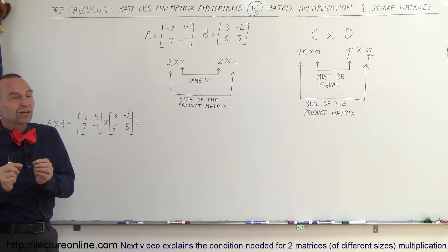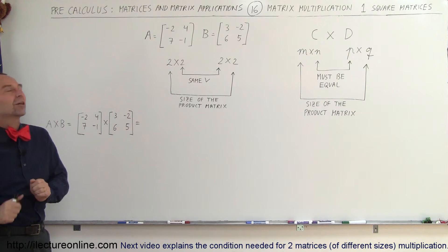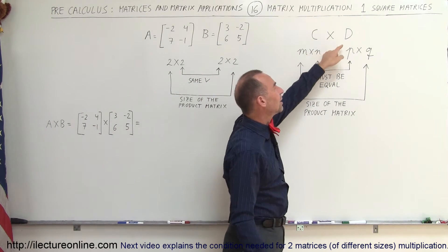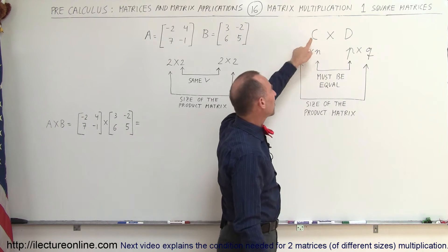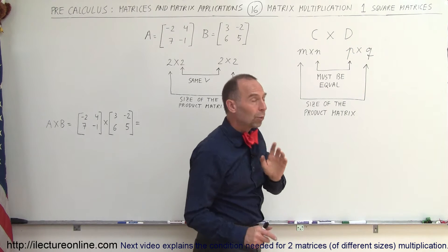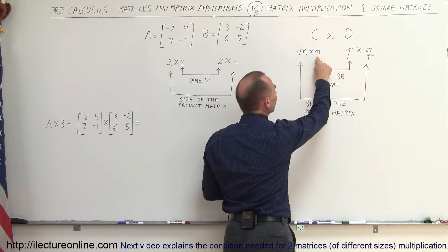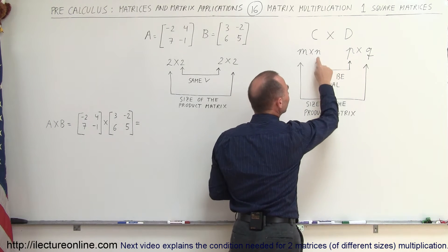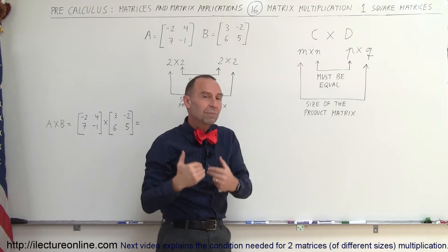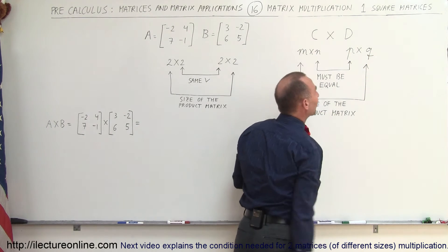Since we're starting with square matrices, we already know automatically that we can multiply those matrices because they meet the conditions. But let's look at the general conditions. If matrix C has dimensions M by N, and matrix D has dimensions P by Q, the number of columns of the first matrix must equal the number of rows of the second matrix. Otherwise you cannot multiply the matrices. The resulting product matrix will have the dimensions of the number of rows of the first matrix by the number of columns of the second matrix.